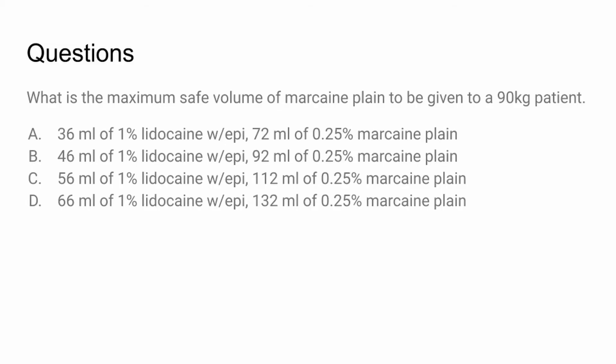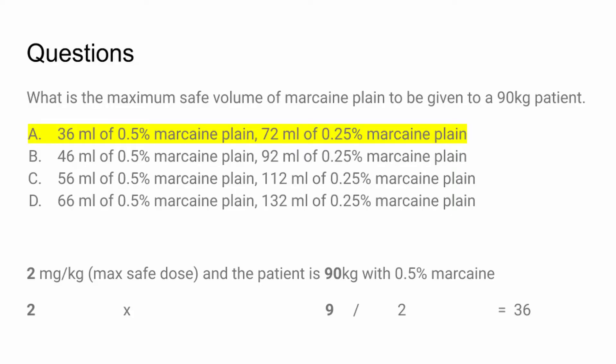What is the maximum safe volume of marcaine plain for a 90 kilogram patient? We remember marcaine plain is given at 2 mg/kg. We multiply 2 × 9 (weight divided by 10), then divide by 0.5% — which is the same as multiplying by 2 — giving 36 milliliters of 0.5% marcaine plain. Or we can do twice that of 0.25% marcaine plain, so 72 milliliters.